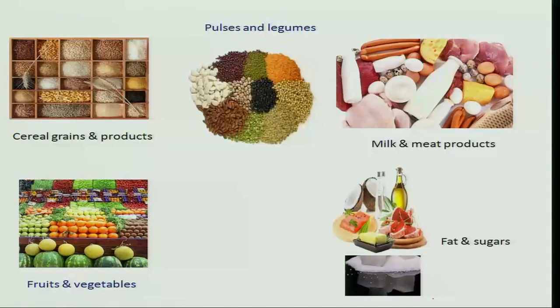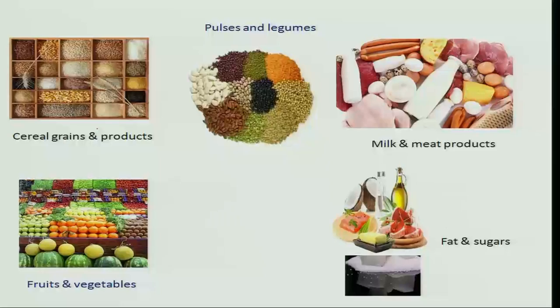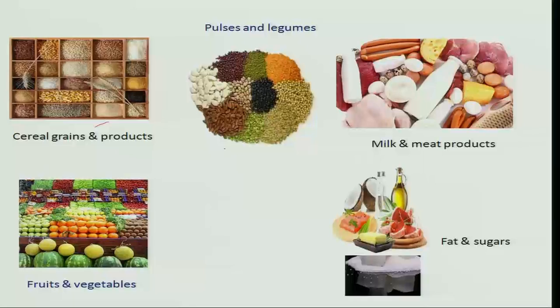Cereal grains including millets give us sufficient amounts of energy and protein. Since cereals are consumed in large quantities as a staple food, the amount consumed gives sufficient protein — almost 50 percent of protein may come from cereals and grains. Pulses and legumes mainly provide protein, meat and milk products provide protein, fruits and vegetables provide vitamins and minerals, and fats and sugars are pure sources of energy: 1 gram of sugar gives 4 kilocalories and fat gives 9 kilocalories per gram.